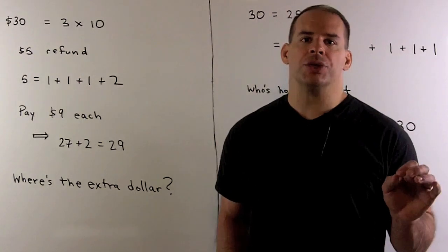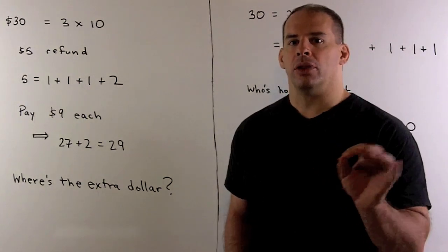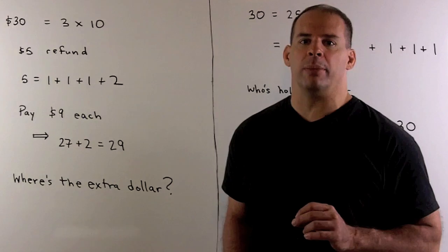When the guests get their $5, they decide we'll keep $1 each and we'll give the extra $2 to the bellhop.